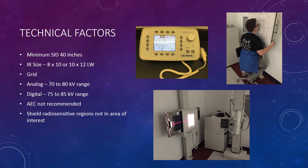Technical factors for the Waters projection include an SID of 40 inches, an 8x10 or 10x12 lengthwise image receptor, a grid, and 70-80 kV for analog systems or a range of 75-80 kV for digital. AEC is not recommended for this image. It is important to shield radiosensitive regions not in the area of interest.